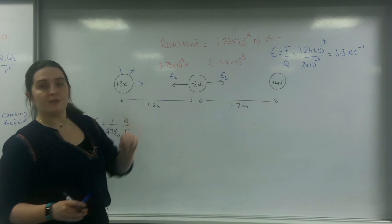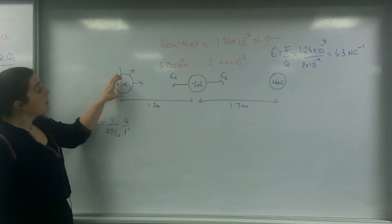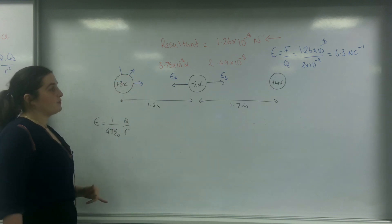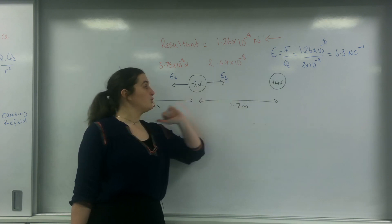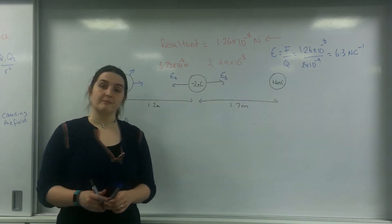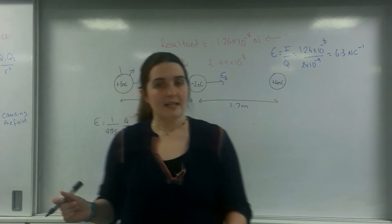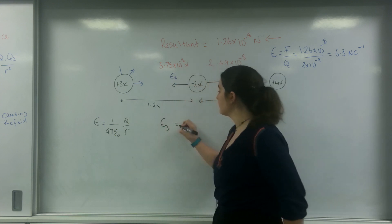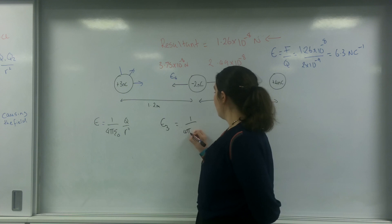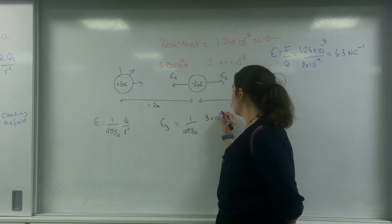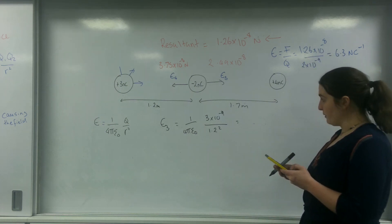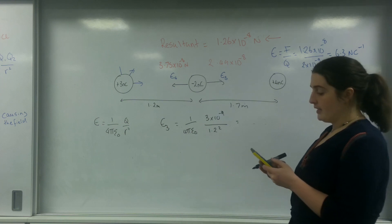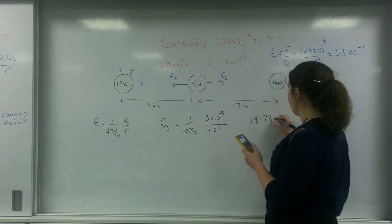I've labelled the directions of these fields. Remember, positive charges have fields going away from them. So the field from the 3 nanocoulomb charge goes this way, and the field from the 4 nanocoulomb charge goes this way. For E3: 1 over 4 pi epsilon 0, times 3 times 10 to the minus 9, over 1.2 squared — that's 8.99 times 10 to the 9 times 3 times 10 to the minus 9, divided by 1.2 squared — giving 18.73 Newtons per Coulomb.